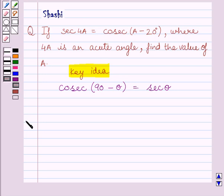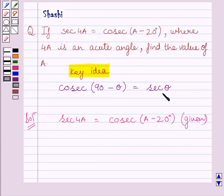Now, let us start the solution. We are given sec 4A equals cosec A minus 20 degrees. We know sec theta equals cosec 90 minus theta. Here, we can write sec 4A equals cosec 90 minus 4A, where the value of theta equals 4A.